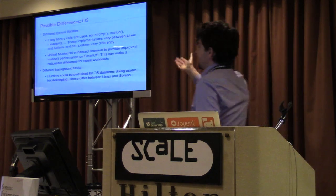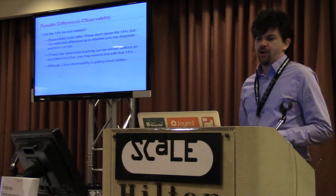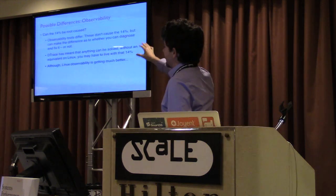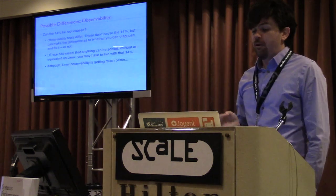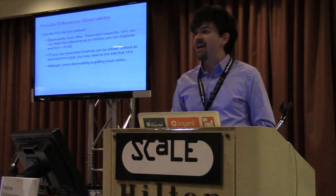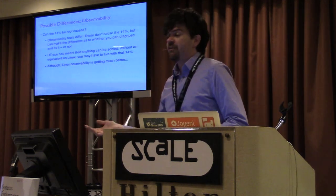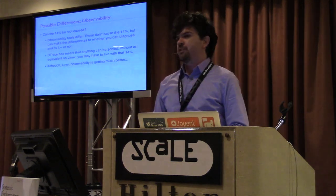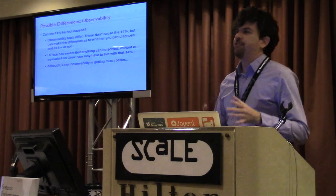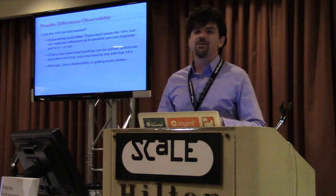One of our engineers enhanced libumem, our high-performing user-space memory library, to improve malloc performance as a competitive differentiator — and Perl uses malloc. Different background tasks and daemons can differ as well. Another dimension is observability tools: they don't cause the 14% difference, but they determine whether you'll debug and fix it. DTrace has meant that anything can be solved. Without an equivalent on Linux, you may have to just wear the 14%, because you can't get into the kernel and debug the issue the same way.